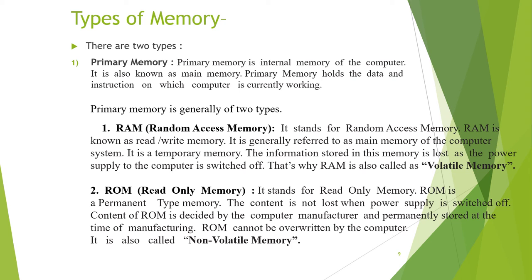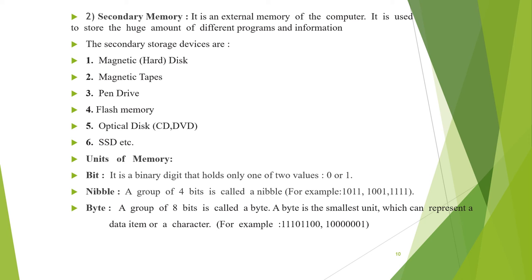The content of ROM is decided by the computer manufacturer and permanently stored at the time of manufacturing. ROM cannot be overwritten by the computer, which is why it is called non-volatile memory. So RAM is temporary/volatile and ROM is permanent/non-volatile. Secondary memory is the external memory of the computer, used to store huge amounts of data. Secondary memory devices include magnetic disc, magnetic tape, pen drive, flash memory, optical disc (CD or DVD), and SSD for cloud-based storage.